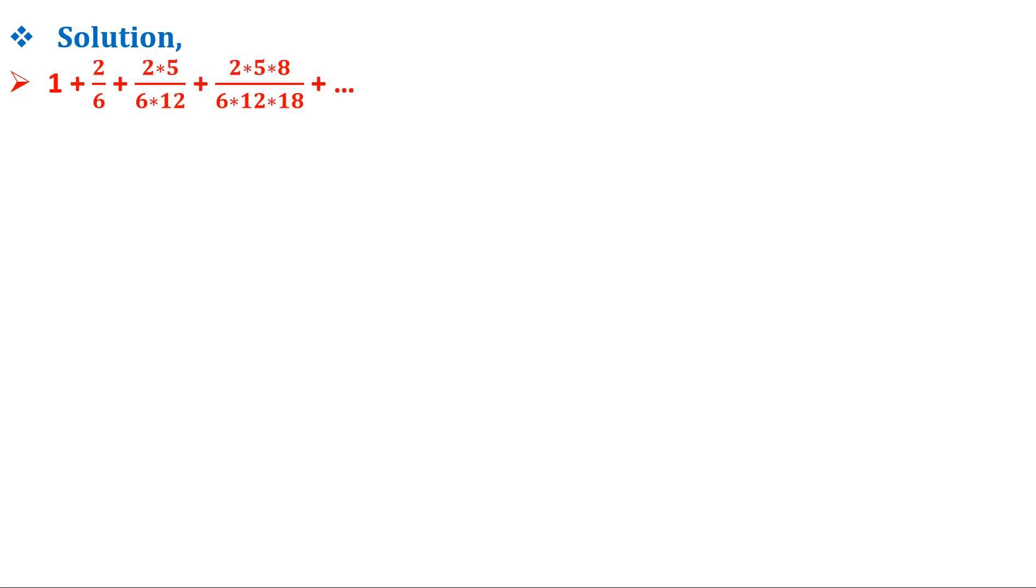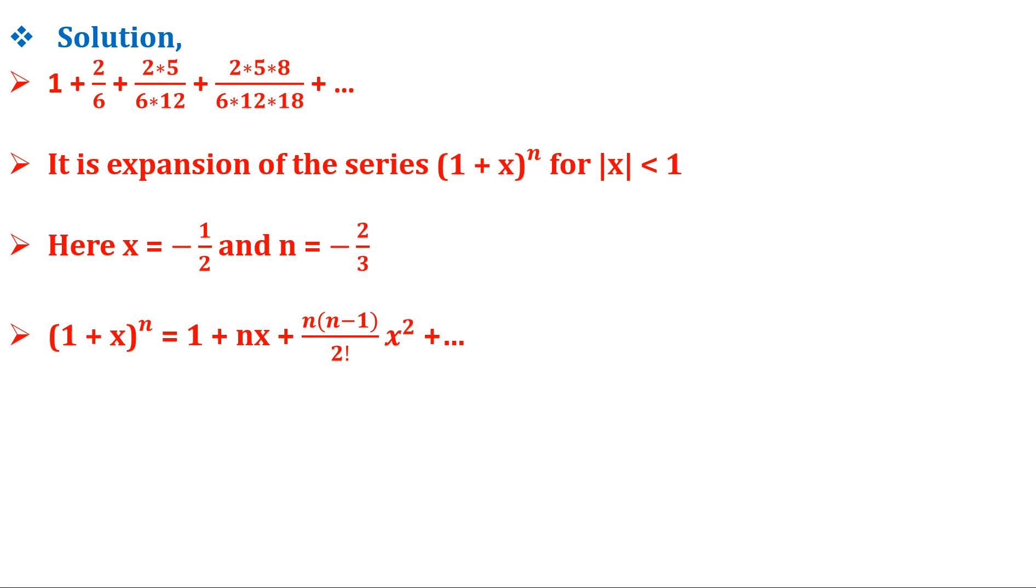Solution: here 1 plus 2 by 6 plus 2 into 5 by 6 into 12 and so on is an expansion of the series (1 + x) raised to n for mod x less than 1. Take x equals to minus 1 by 2 and n equals to minus 2 by 3.